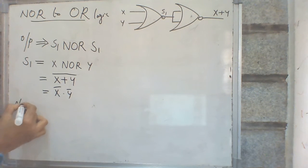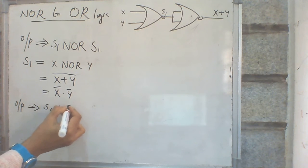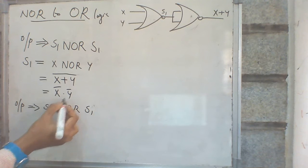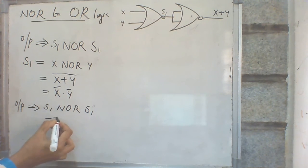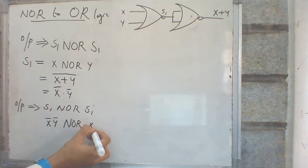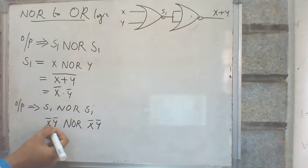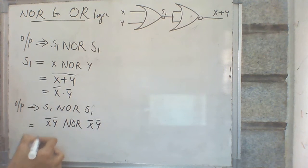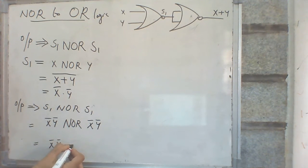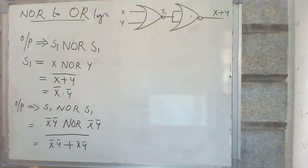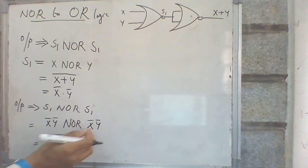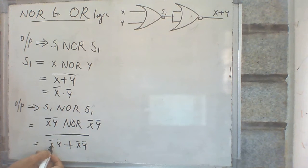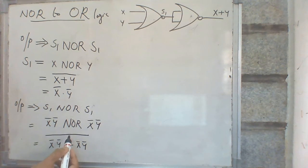The final output is S1 NOR S1. Instead of S1, we substitute X bar Y bar. So the final output becomes X bar Y bar NOR X bar Y bar. The first input is X bar Y bar and the second input is also X bar Y bar. For a NOR gate, the output is the OR of the two inputs, with a bar: X bar Y bar plus X bar Y bar, the whole bar.